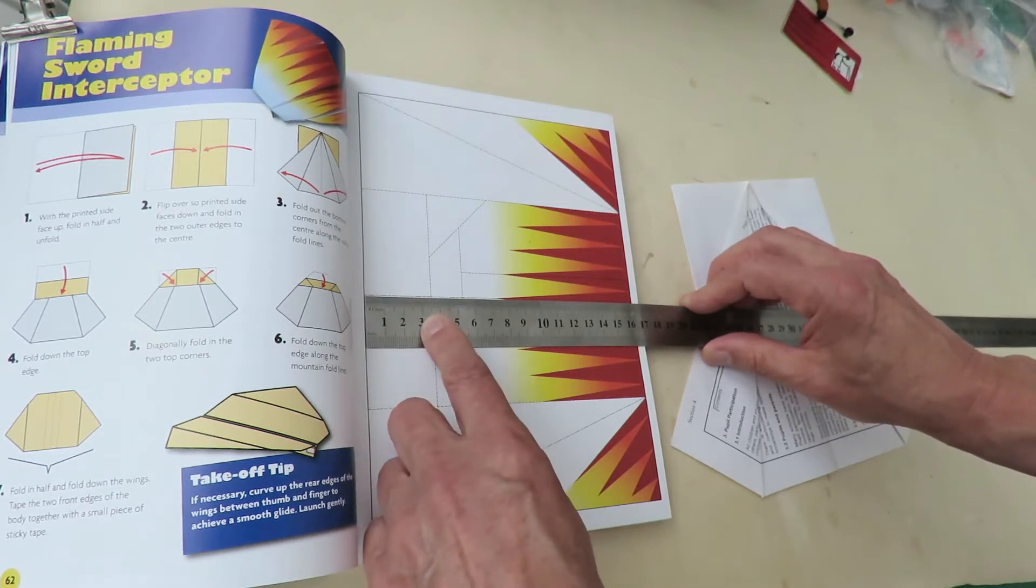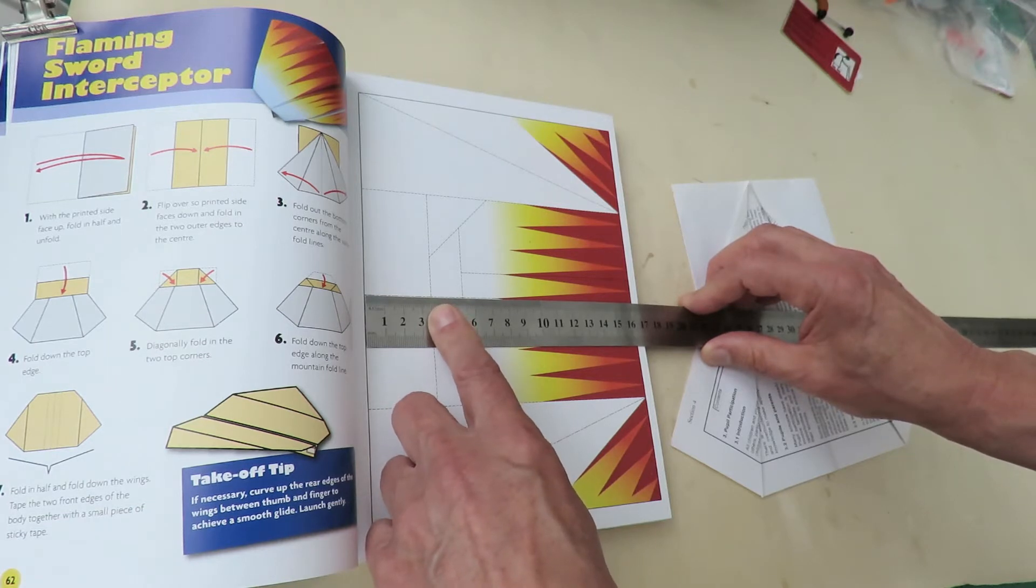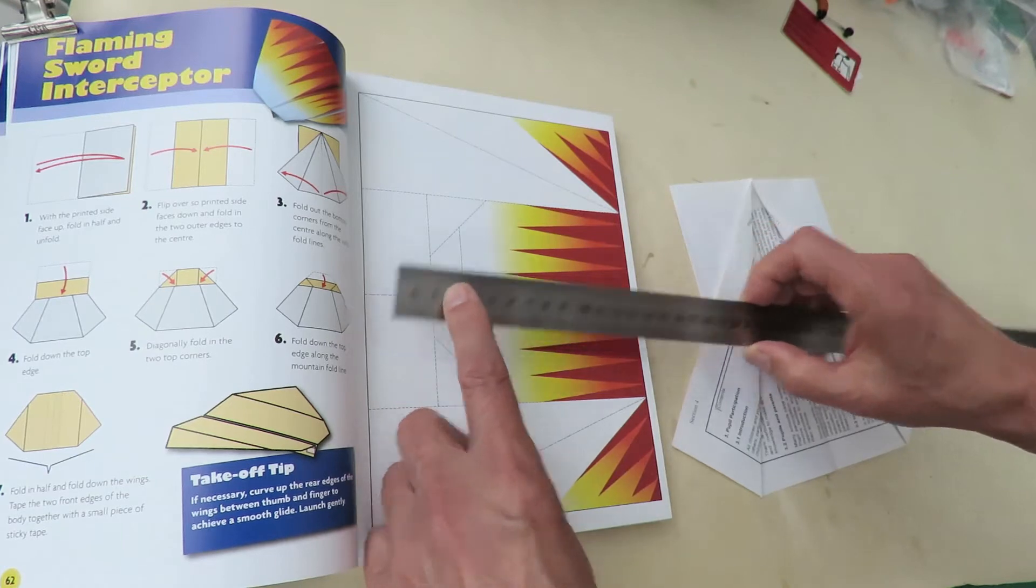So it'll be three half inches, so one and a half inches, plus another half of one, which would be a quarter of an inch. So, one and three quarter inches.